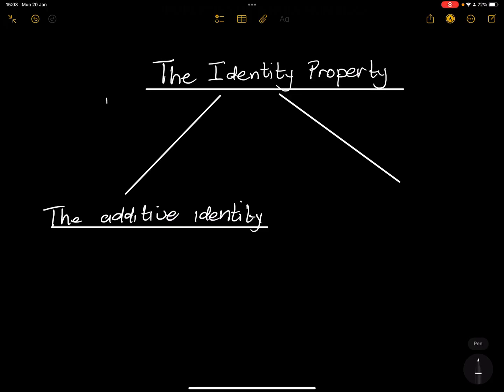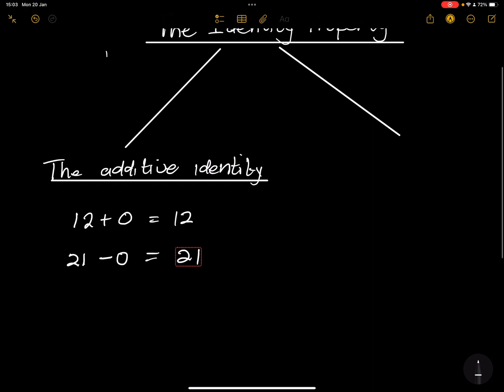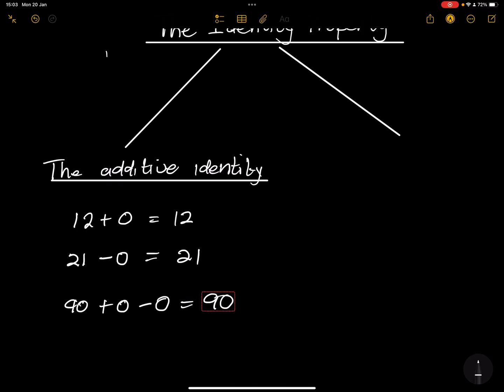It is an identity. So if I take 12 plus 0, what does that give us? 12. The number still remains the same. If you take any number, 21 subtract 0, what does that give us? It will still give us 21.